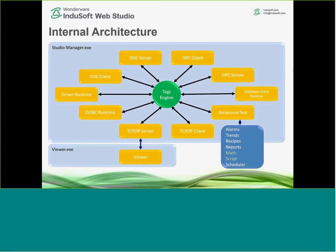A little about our internal architecture: the product has a main tags engine, and several tasks run independently, with the tags engine connecting all of them. For instance, our OPC client communicates with a server to get data and sends that data to the tags engine. The tags engine then propagates the tag value — for example, to the TCP/IP server, and from there to a viewer or remote thin client. The core of the product is the tags engine.